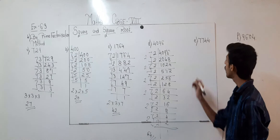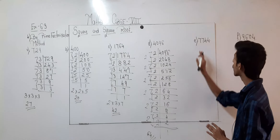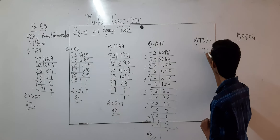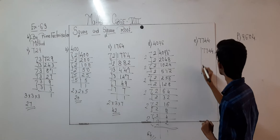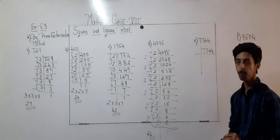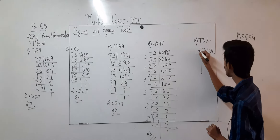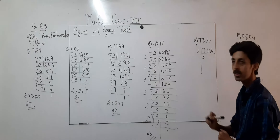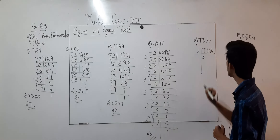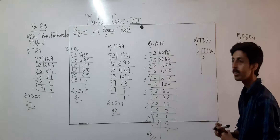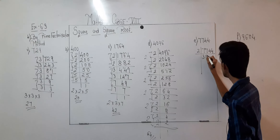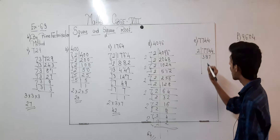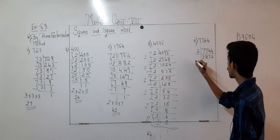Now moving on to question number E, which is 7744. Again 4 is the last digit, so concept of 2: 2 times 3 is 6, 1 remaining giving 17; 2 times 8 is 16, 1 remaining giving 14; 2 times 7 is 14, and 2 times 2 is 4.